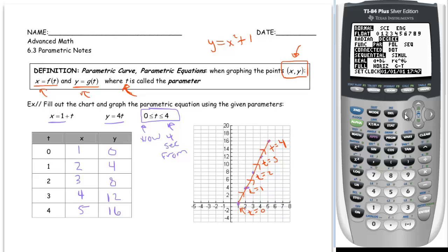Then go to your y equals. You'll notice that you have x1 of t and y1 of t to set up for a parametric equation. So for x1 you are going to put 1 plus, and the t button is where the x button normally is. See how it says x comma t comma theta comma n. If you press that it's going to be a t in parametric mode. And for y1 you're going to type in 4t.